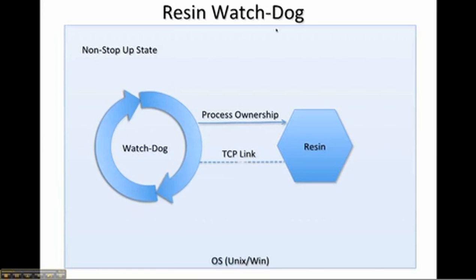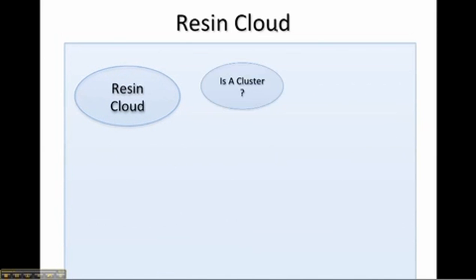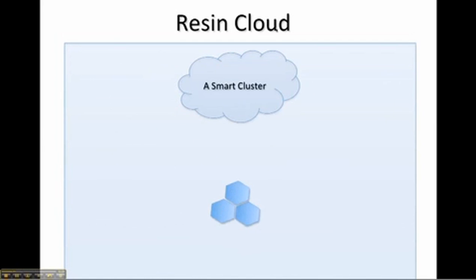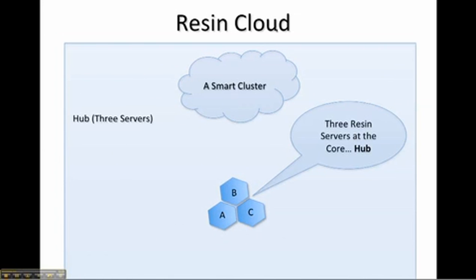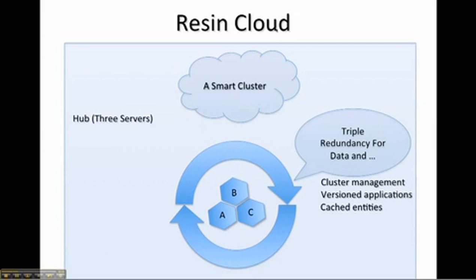Resin Cloud support is Resin's third-generation clustering support. Resin Cloud uses a hub and spoke architecture. The heart of Resin Cloud is the triad. Each pod gets a triad, and each cluster can have many pods. Each pod has up to 64 servers. There are 3 servers in the triad to support 99.999999 uptime.